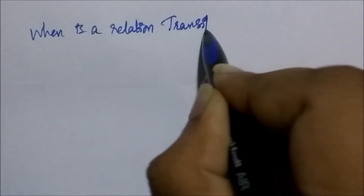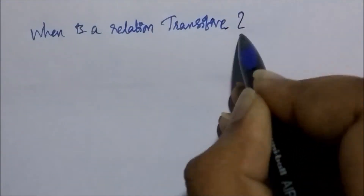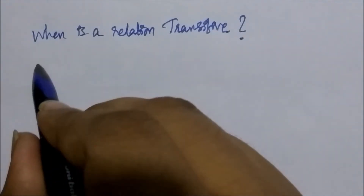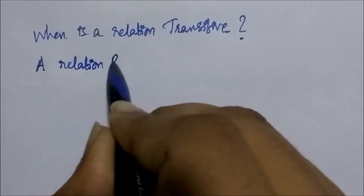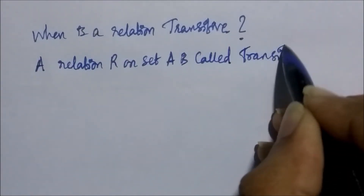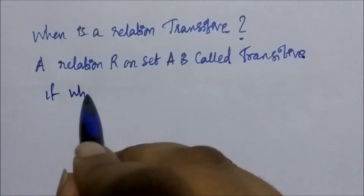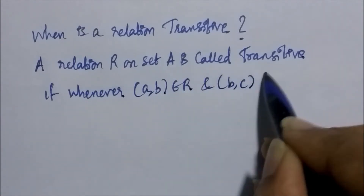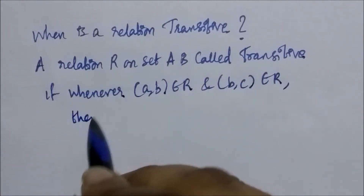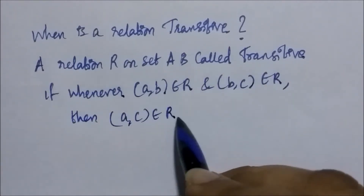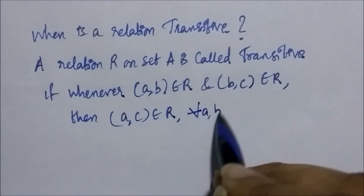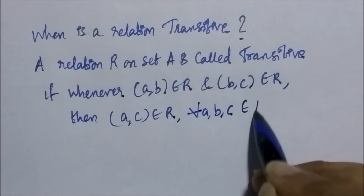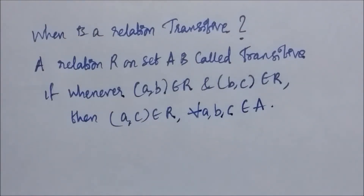When is a relation transitive? A relation R on set A is called transitive if whenever (a,b) is in the relation and (b,c) is in the relation, then (a,c) is also in the relation, for all a, b, c belonging to set A.